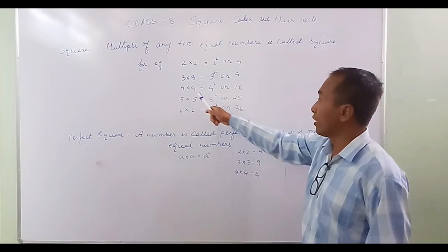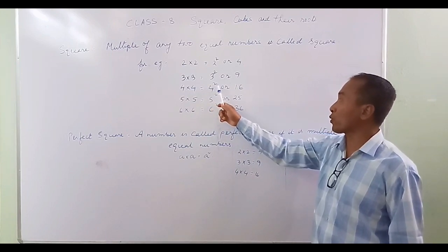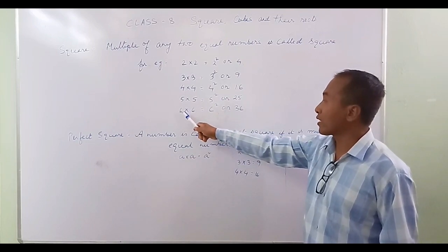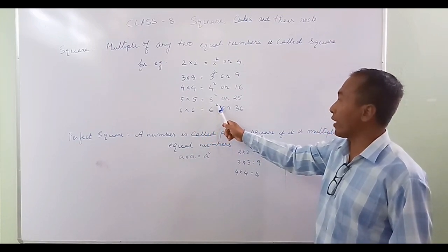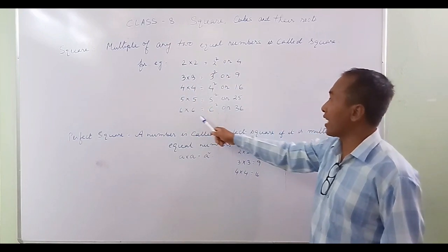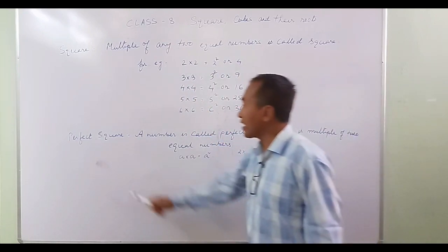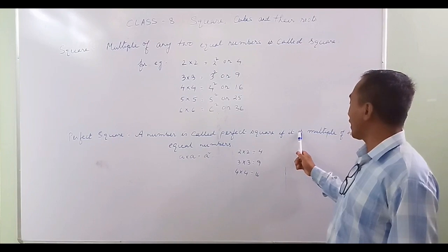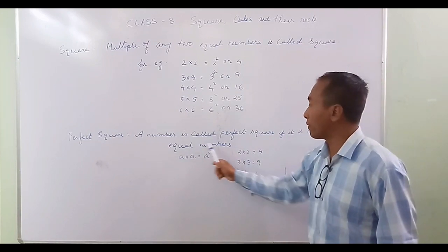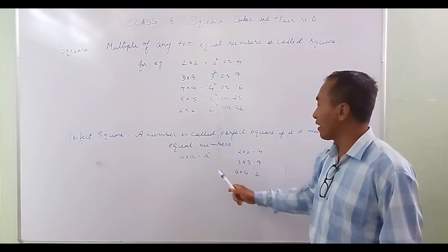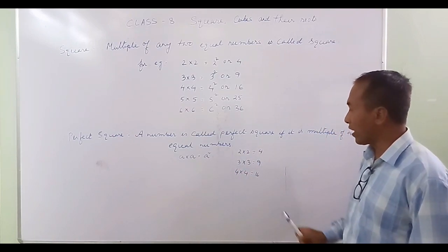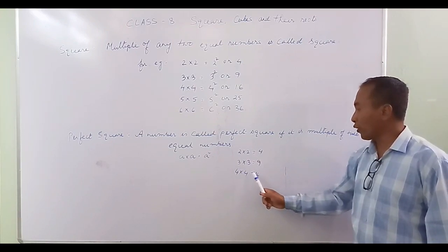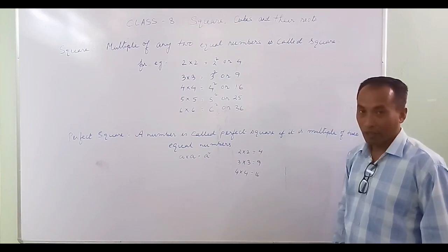4 into 4 we can express as 4 square, or 16. 5 into 5 is 5 square. 6 into 6 is 6 square. All these numbers are perfect squares. A number is called a perfect square if it is the product of two equal numbers — for example, 2×2=4, 3×3=9, 4×4=16.